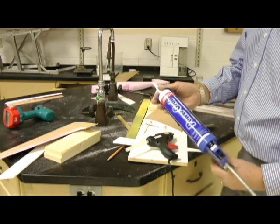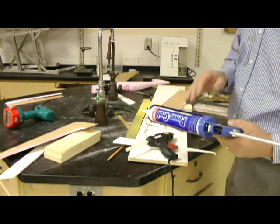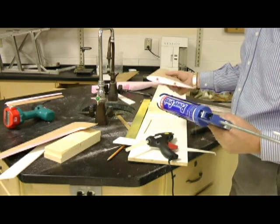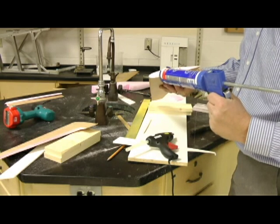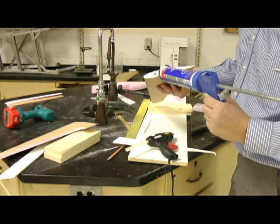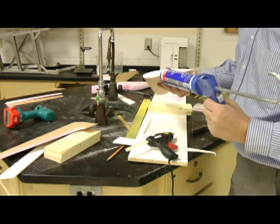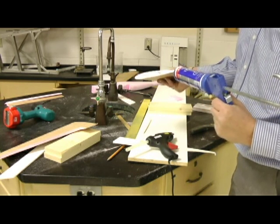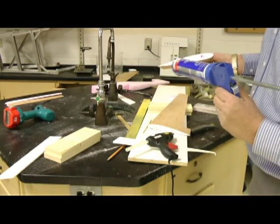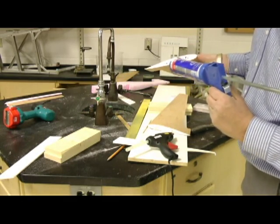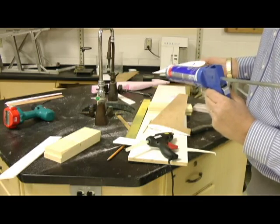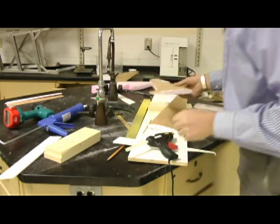To glue this I'm going to use Power Grab. I bought it at the hardware store - it's intended for foams. You have a bit of working time with it, but you don't want to extend it too long. I'll fill this in as best I can, putting it around my pins and going all the way out. When working with this, it's a good idea to put it on both surfaces, but you don't have to put a lot on the second surface - just enough to wet it.